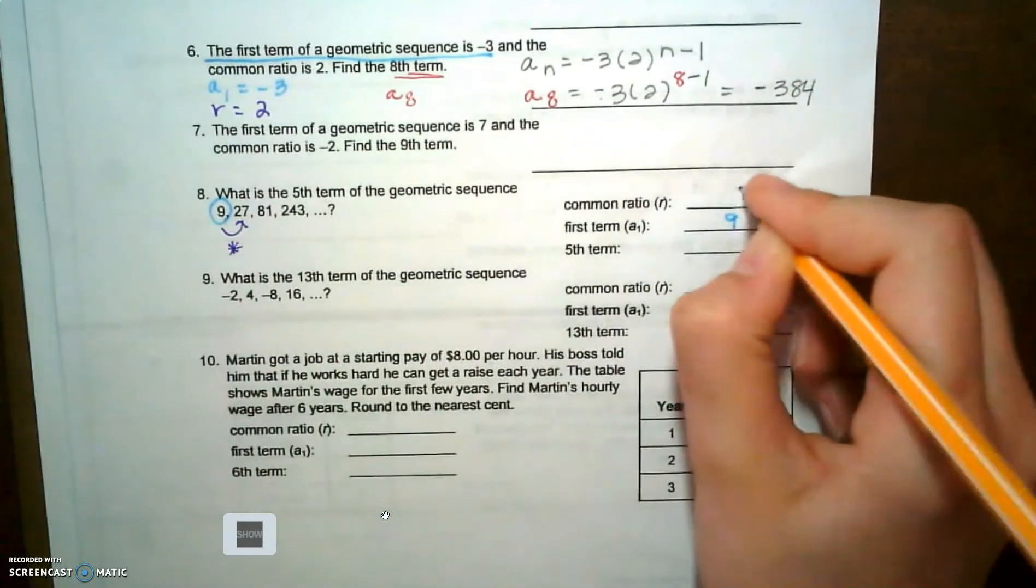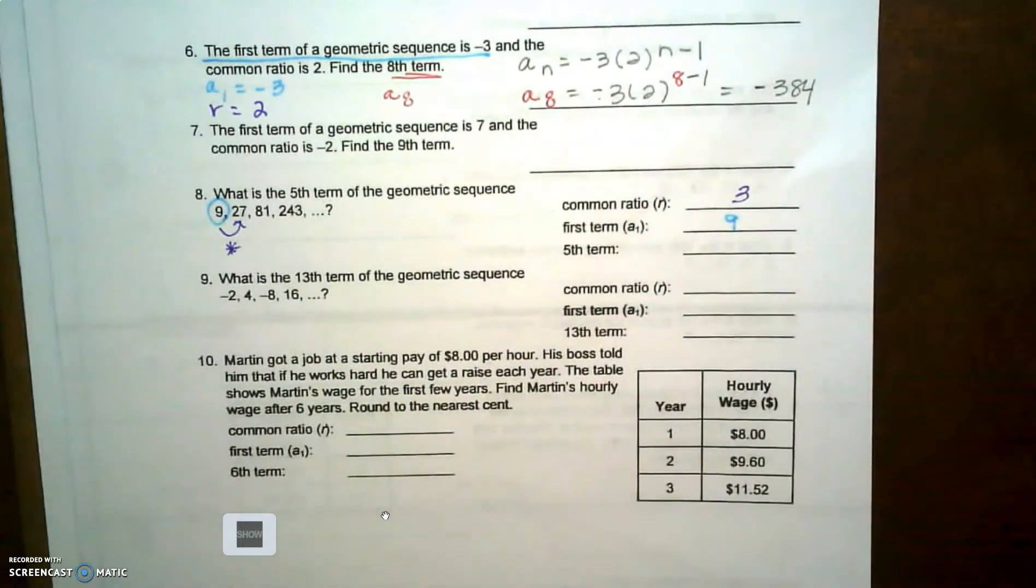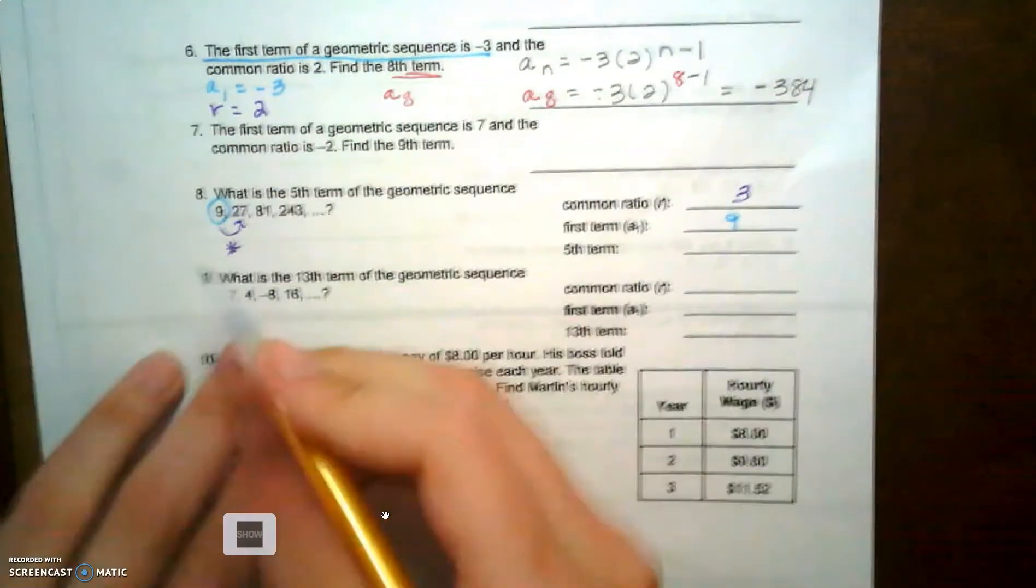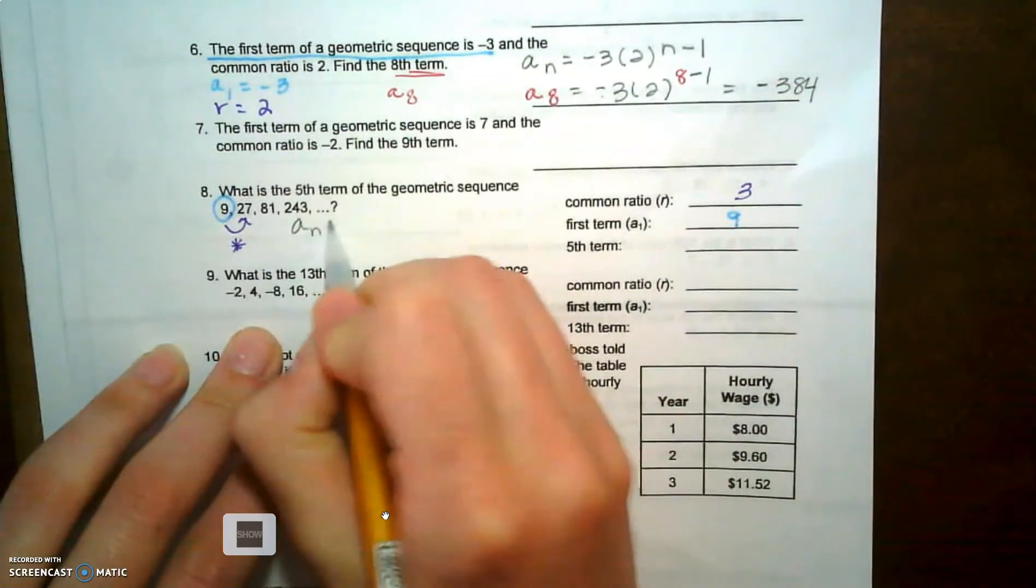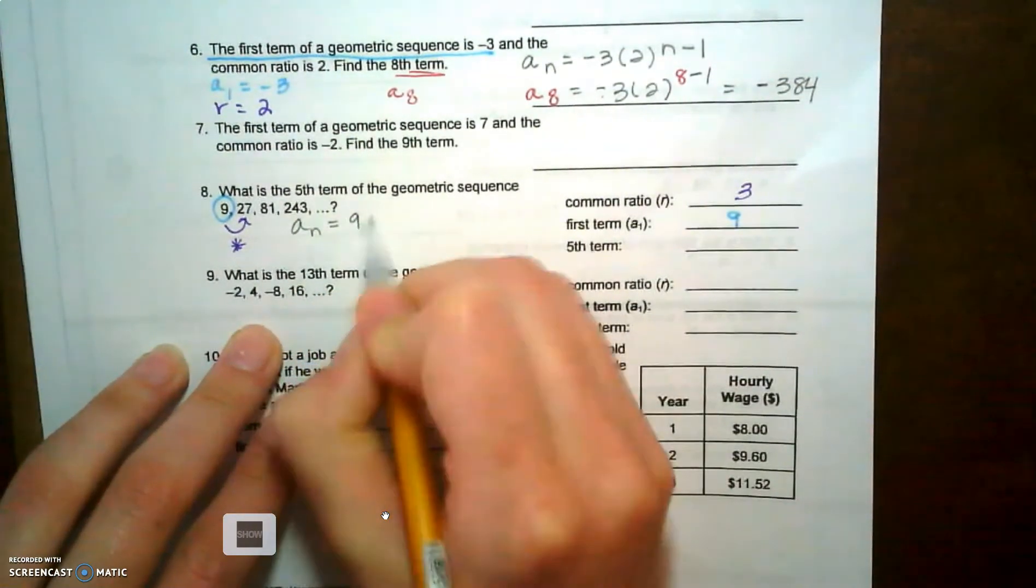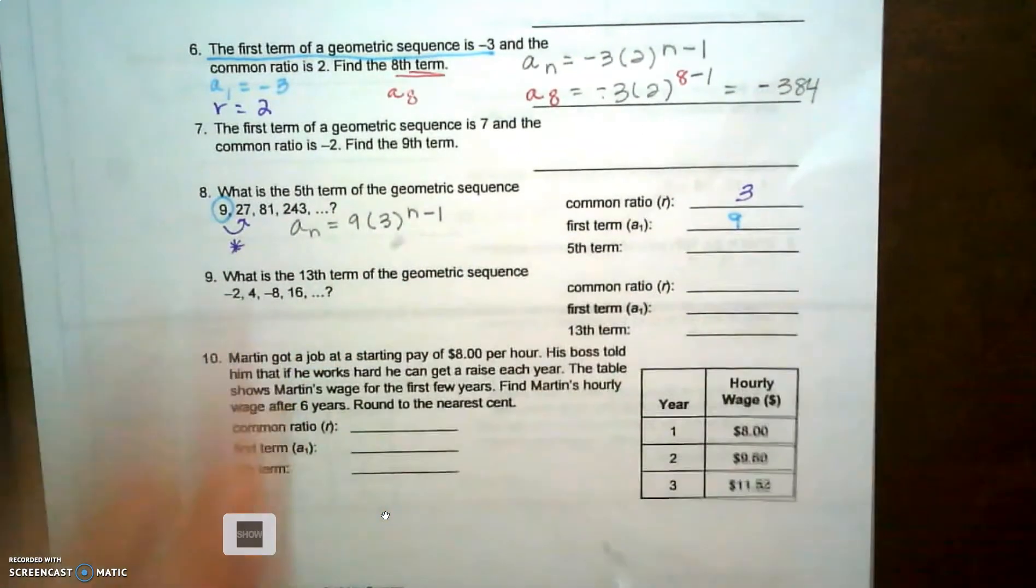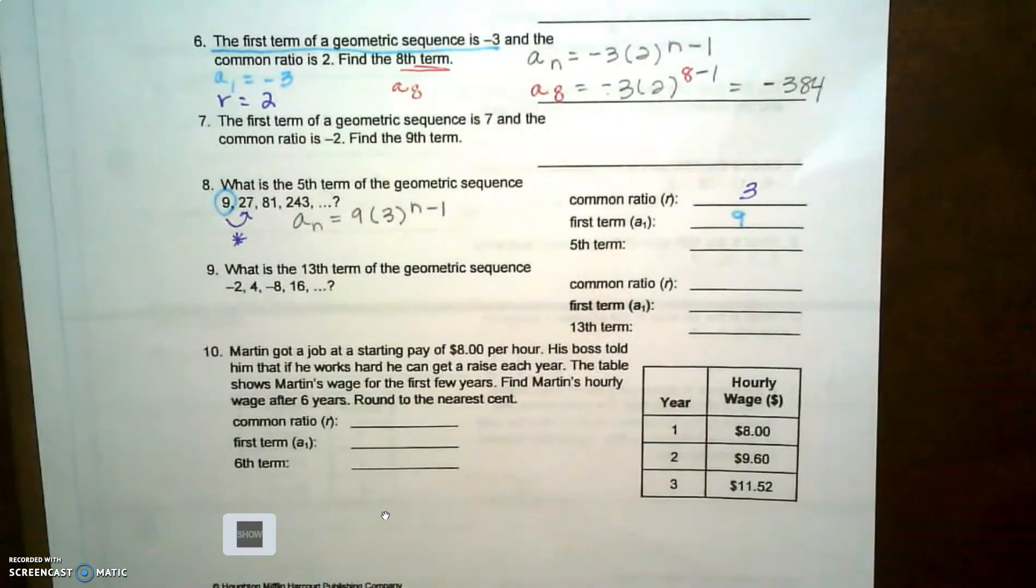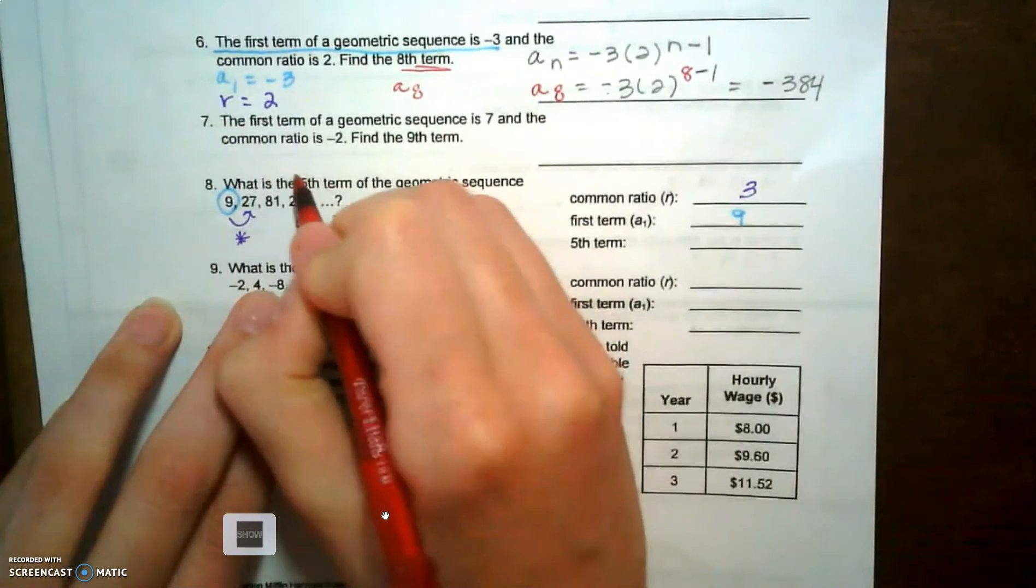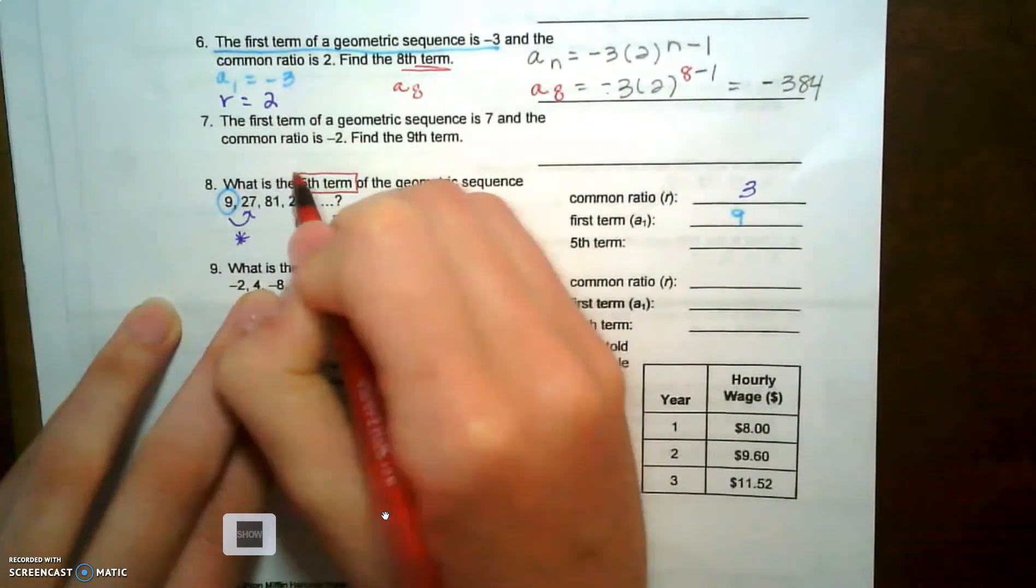So I'm gonna write this explicit equation first: a sub n equals my first term times my common ratio raised to the n minus one. They want to know the fifth term, so to find the fifth term, that's a sub five.